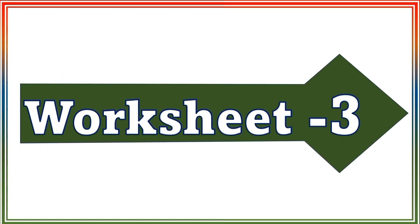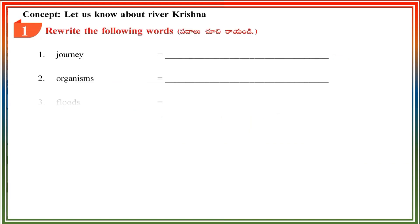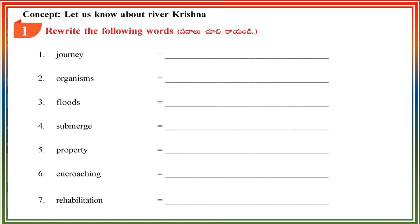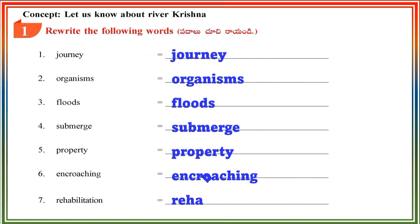Worksheet 3 — Concept: Let us know about River Krishna. Section 1: Rewrite the following words. Journey. Organisms. Floods. Submerge. Property. Encroaching. Rehabilitation.